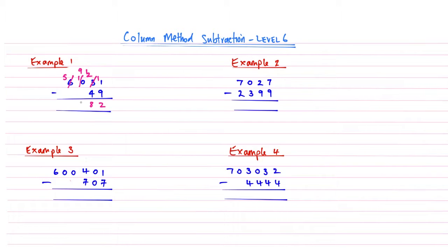Now the hundreds column, 9 subtract nothing just gives me 9, and then 5 subtract nothing gives me 5. That gives an answer of 5,982 for example number 1. As you can see, we've now got a combination of the borrowing concept, the chain of borrowing, and then the double compensating. You'll see it again in example number 2.